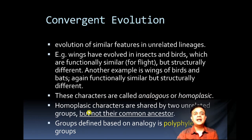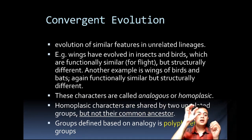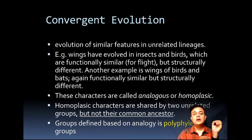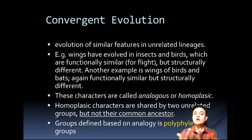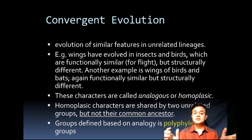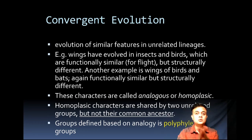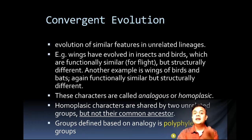Homoplastic characters are shared by two unrelated groups but not their common ancestors. For example, wings of bats versus wings of birds — their common ancestor, an amniote, did not have the same wing character. The common ancestor of butterflies and birds is an invertebrate that did not possess wing-like structures. Groups defined based on analogies are known as polyphyletic groups — groups defined by analogous evolution, which are considered artificial groupings.